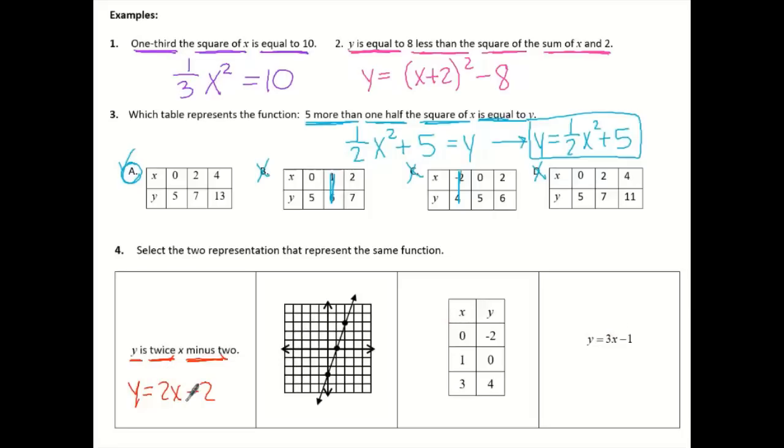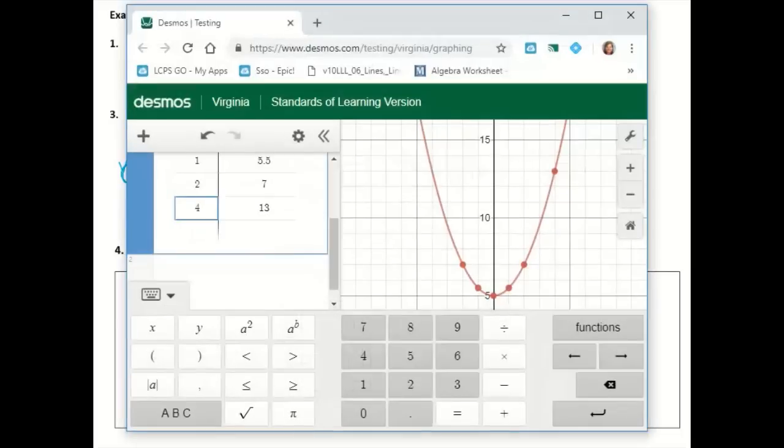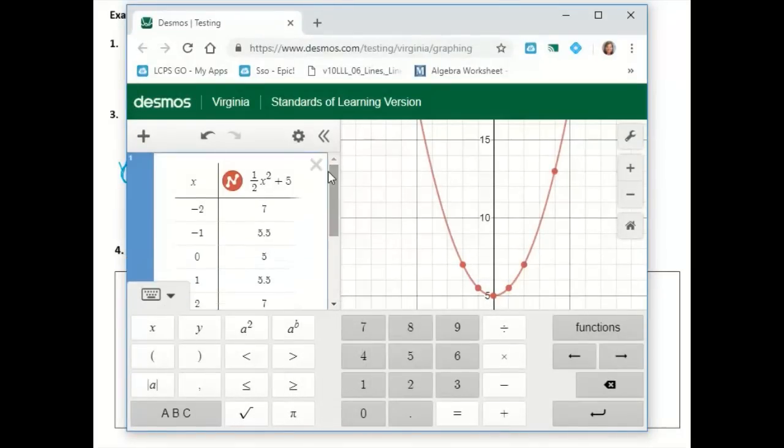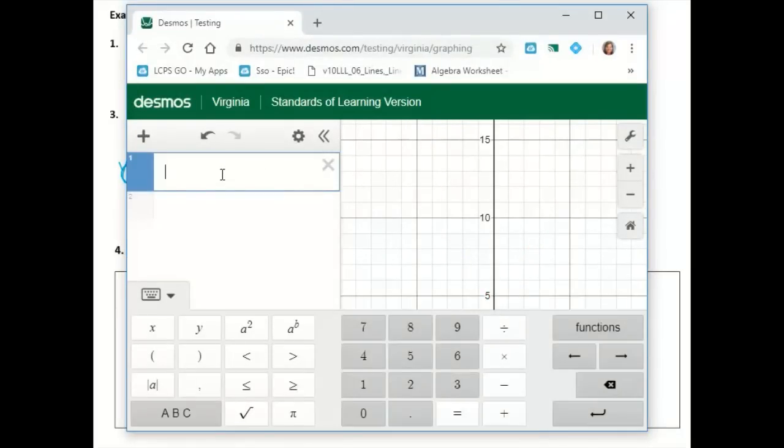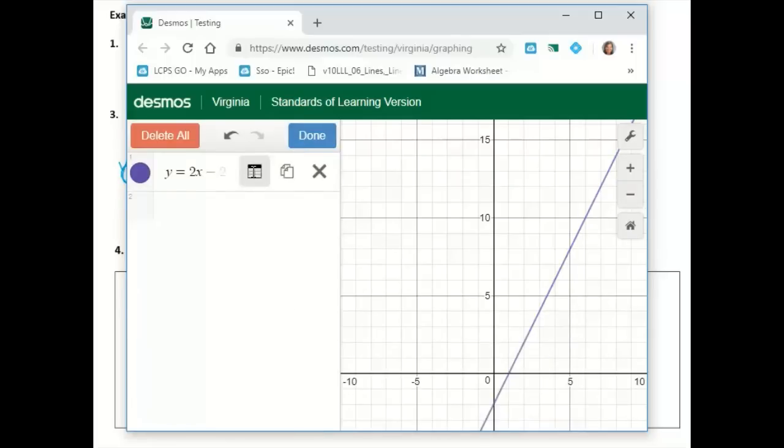We know these two can't match because they're two different equations. So let's type in this one first. We can come back to our Desmos. Let's X out. And type in the one that we got. So Y equals 2X minus 2.